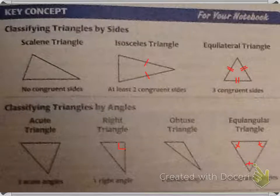Okay, this is a 4.1 notes. The first thing you need for the notes is to copy down these seven triangles. They can be found on page 217 of your textbook.